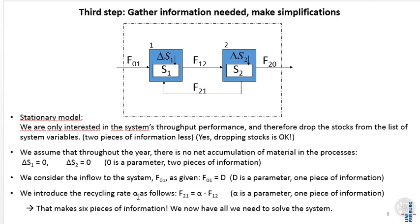In the third step, we gather the information needed to solve the system and make simplifications where appropriate. In the stationary model, we can drop the stocks. We assume everything is running constantly over time, so there's no changes in inventories. We can assume the stock changes are zero, so we have a stationary system with no accumulation, and we can leave the stocks outside the system boundary. Just by this simplification, we got rid of four different system variables that we don't need for our assessment. That leaves us with two pieces of information that we need.